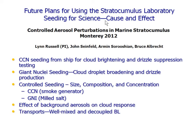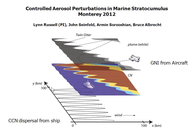We call this seeding for science. The key is cause and effect — it's so difficult using satellite or going out in the field. How do you establish cause and effect? The idea is to produce a controlled source and then better understand cause and effect. The dispersal will be from a ship off the coast. The Twin Otter will be the aircraft used. The Twin Otter is now equipped with an FMCW cloud radar, which is very sensitive to large drops and drizzle — a very useful tool for characterizing whether drizzle is being suppressed, produced, or modified.